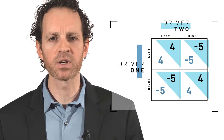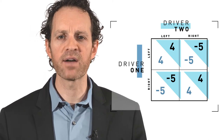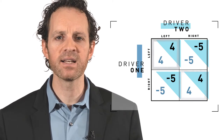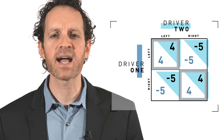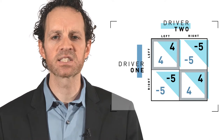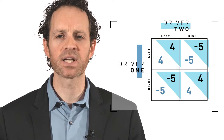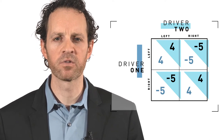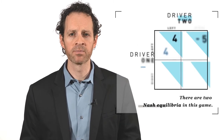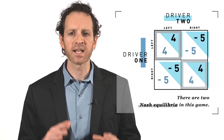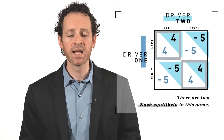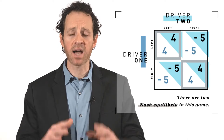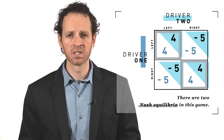If they can coordinate to both drive on the left or right, they will avoid an accident and successfully pass one another, producing a positive payoff. It is important to note that this game has two Nash equilibria — left-left and right-right — illustrated by the highlighted cells.